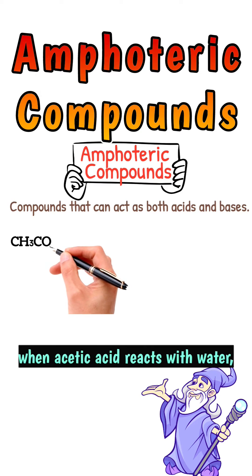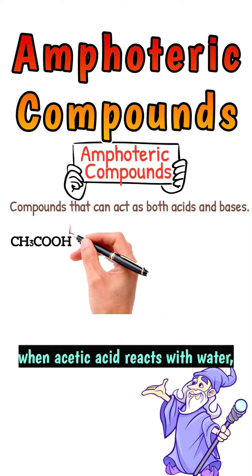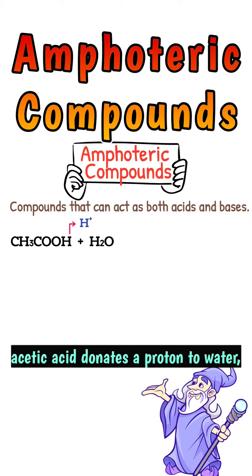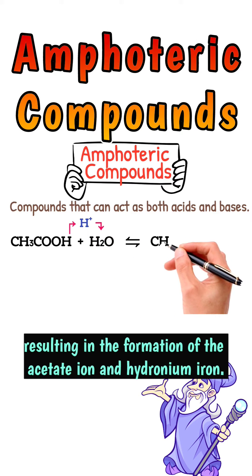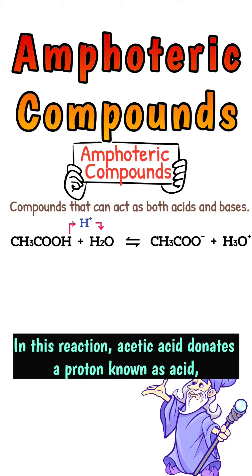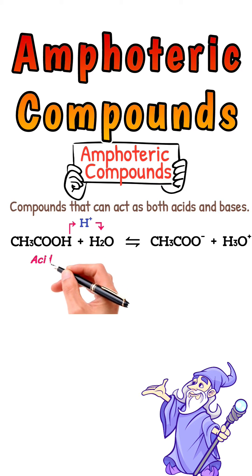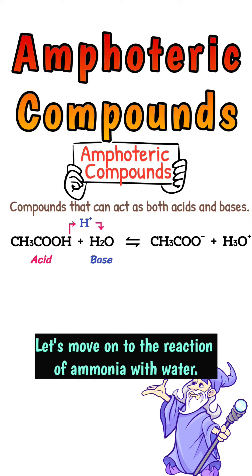For example, when acetic acid reacts with water, acetic acid donates a proton to water, resulting in the formation of the acetate ion and hydronium ion. In this reaction, acetic acid donates a proton, known as the acid, while water accepts a proton, known as the base.